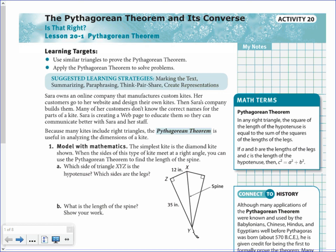The Pythagorean Theorem states that in any right triangle, the square of the hypotenuse — which is the longest side, opposite the right angle — is equal to the sum of the squares of the two legs. So if A and B are your legs and C is the hypotenuse, then C squared equals A squared plus B squared. Some of you may be more familiar with A squared plus B squared equals C squared, and that's acceptable too. That's actually what I will typically use.